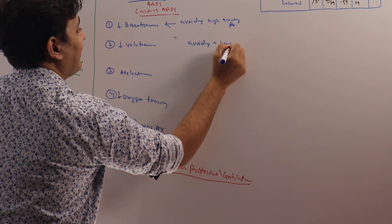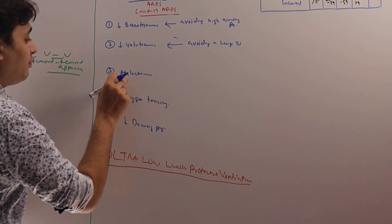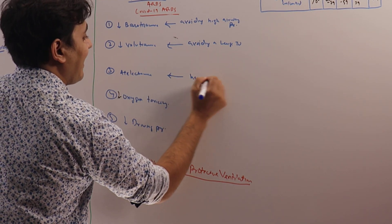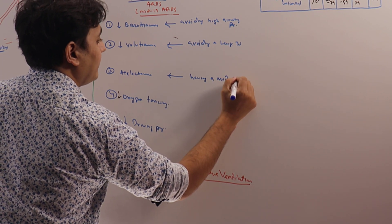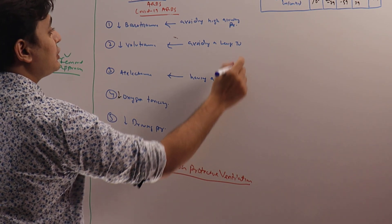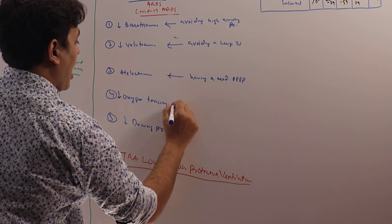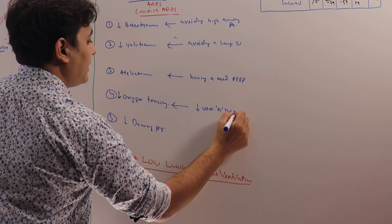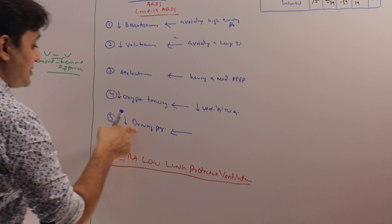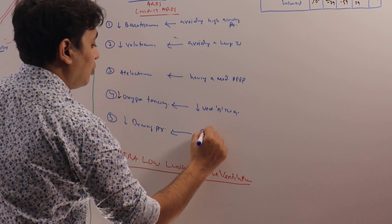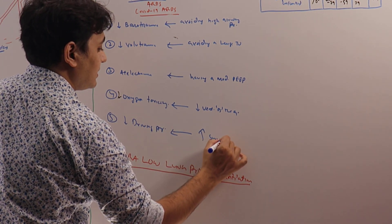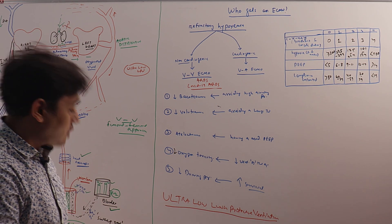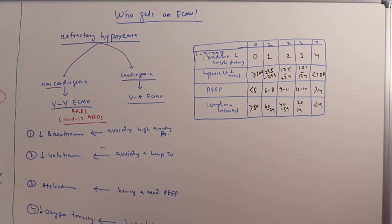How do you prevent atelectrauma? By having a moderate PEEP without significantly increasing the airway pressure. How do we decrease the oxygen toxicity? By decreasing the ventilator oxygen requirement. Because of all this, the driving pressure decreases, which will improve the survival of the patient. This is how ECMO actually helps our patients.